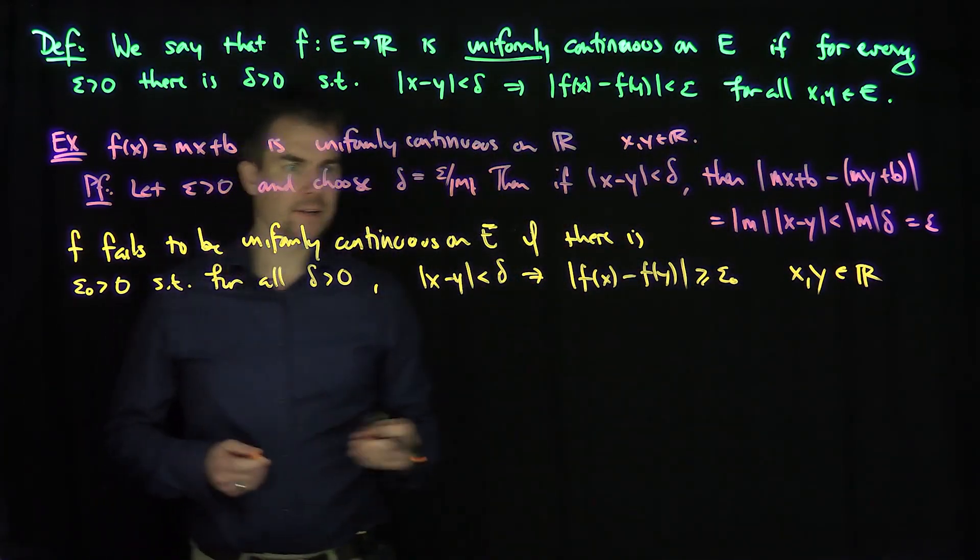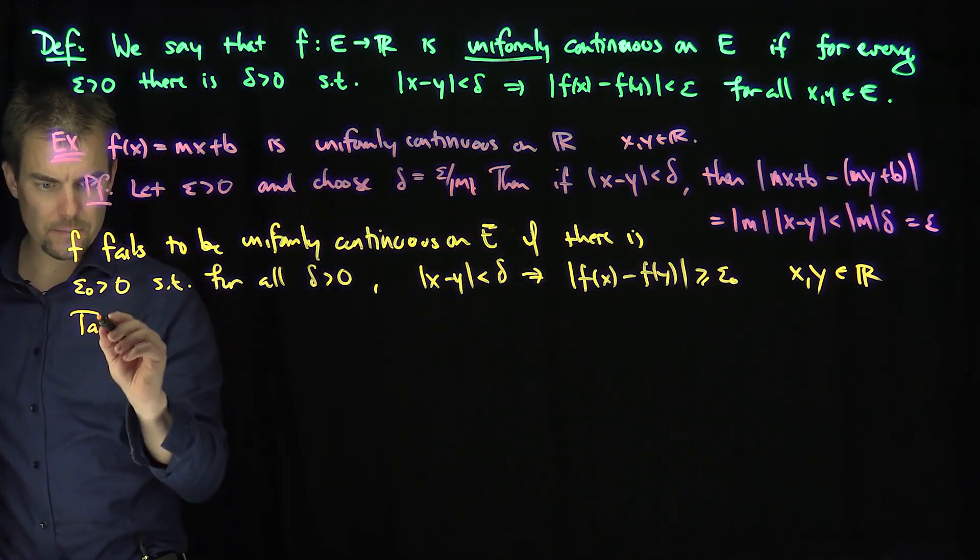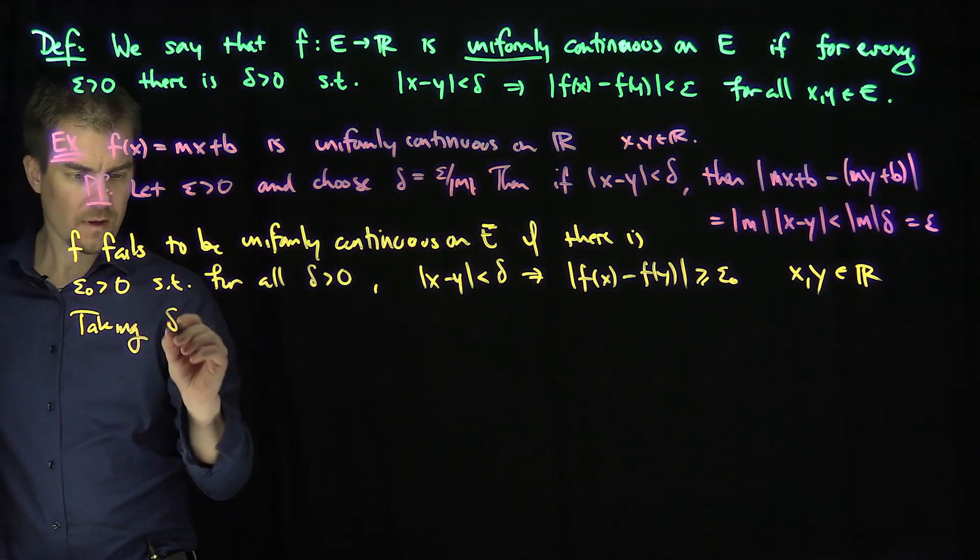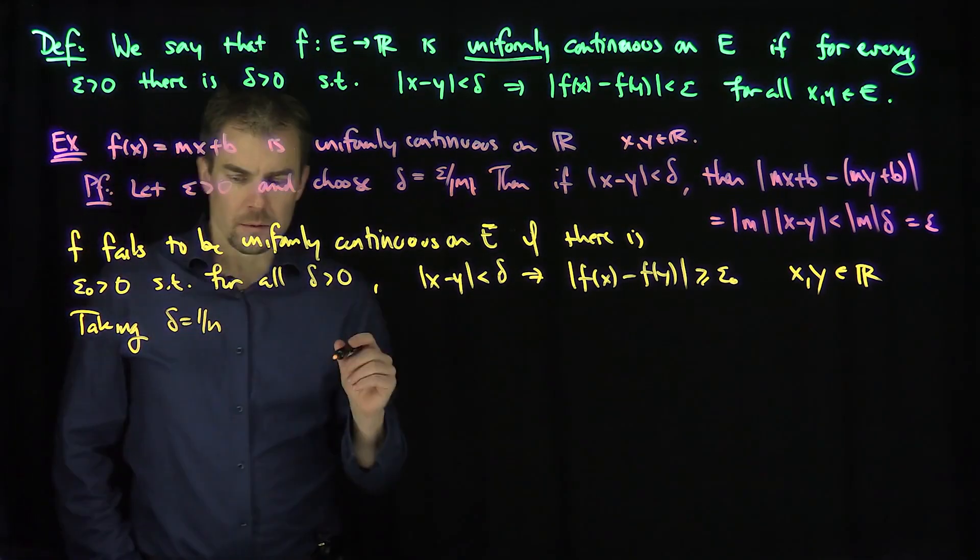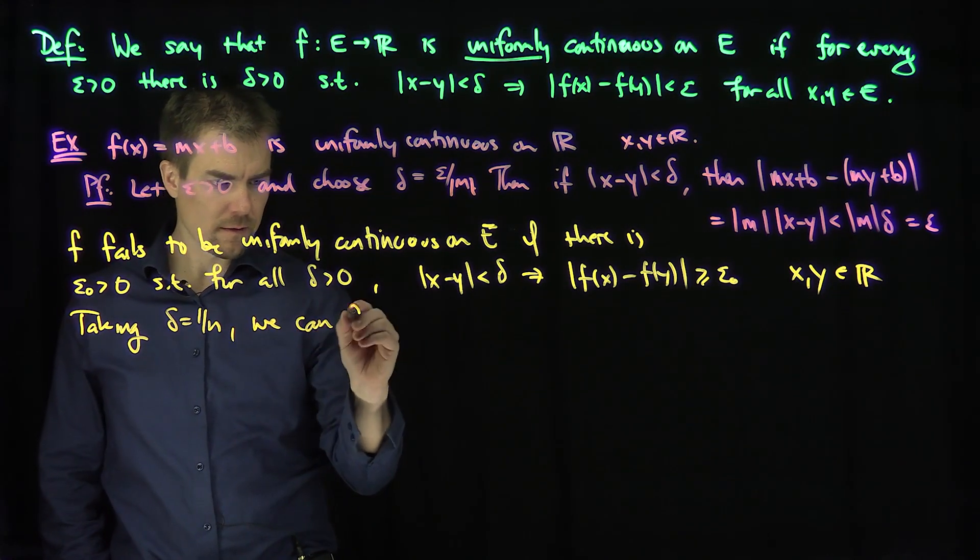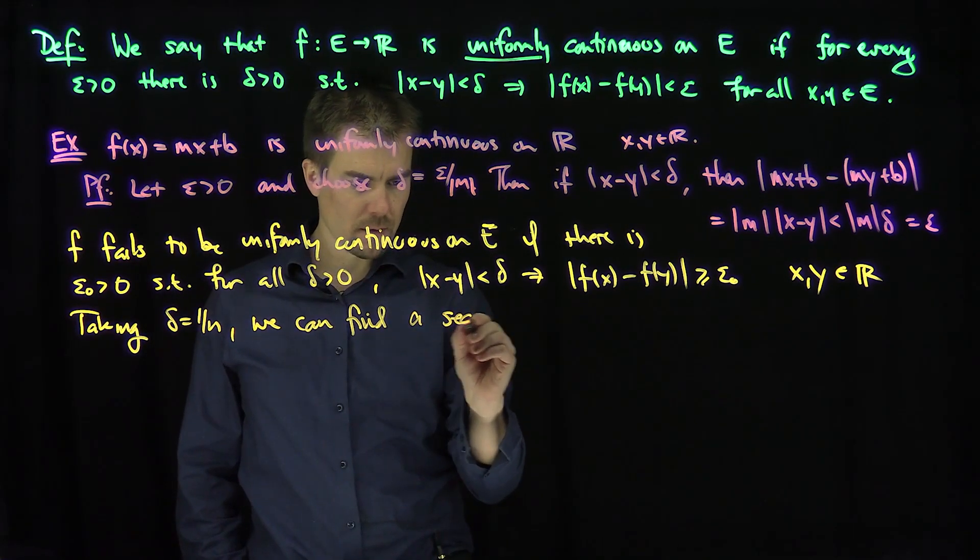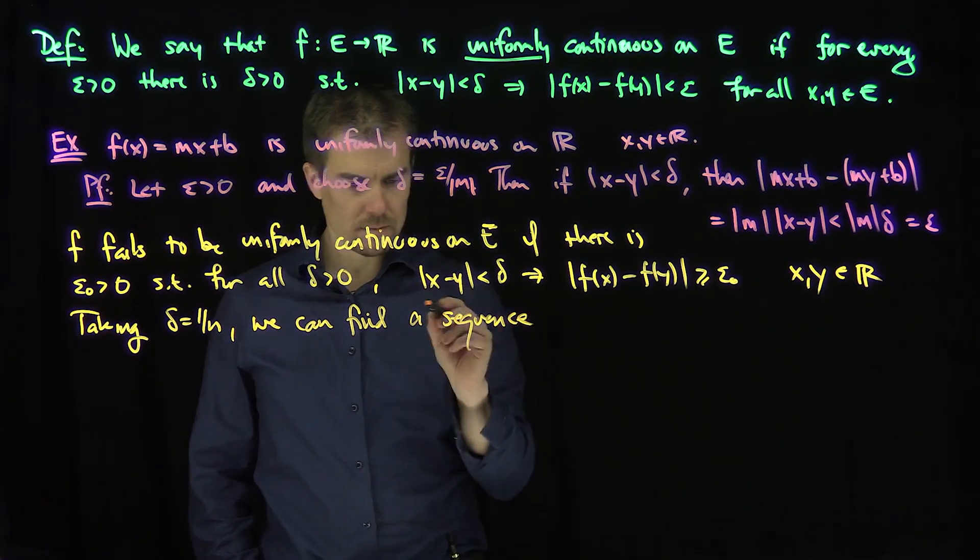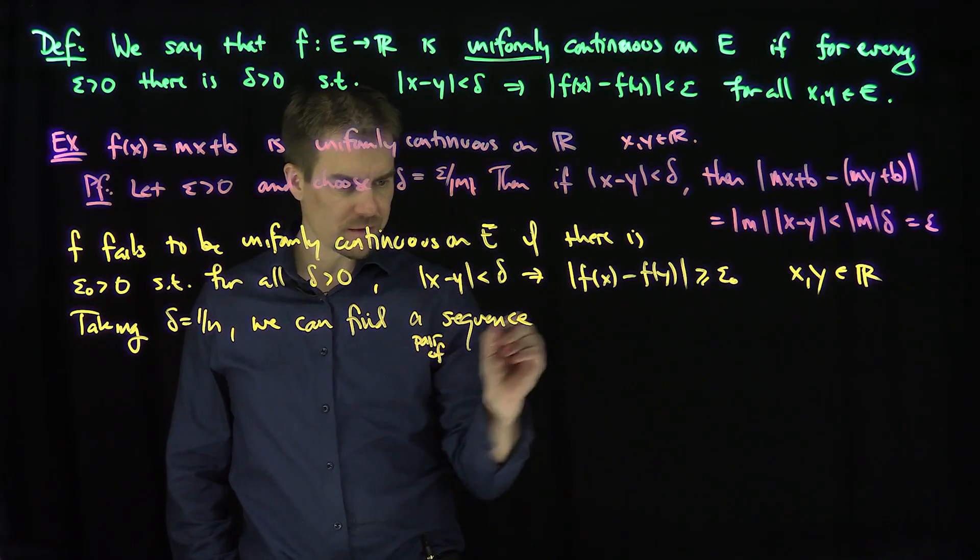And so what this implies, if I take a sequence of delta getting small, for example, if we take delta equals 1 over n, we can find a pair of sequences,